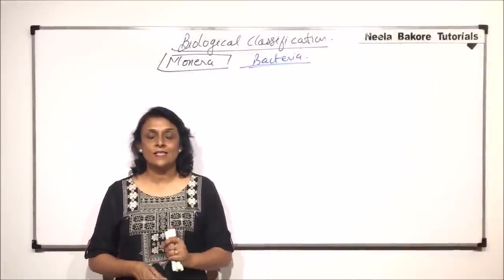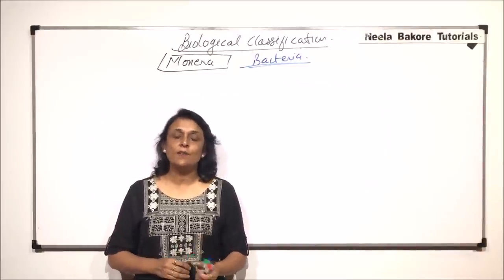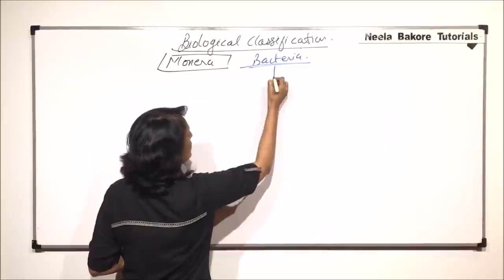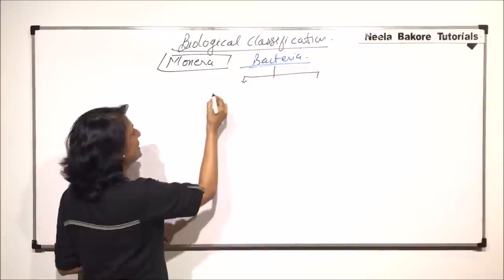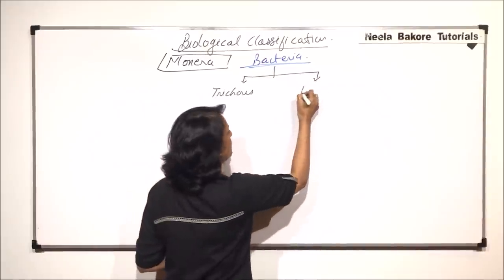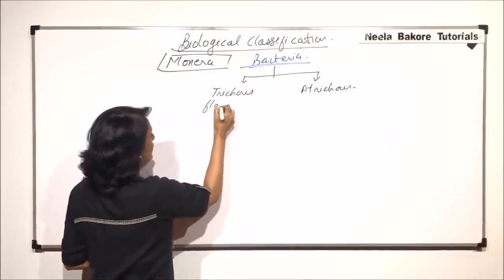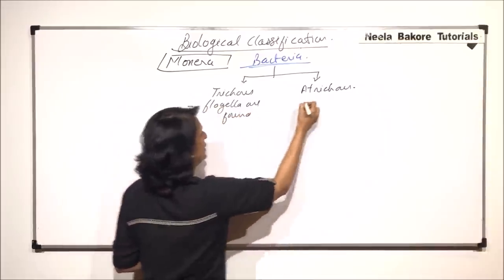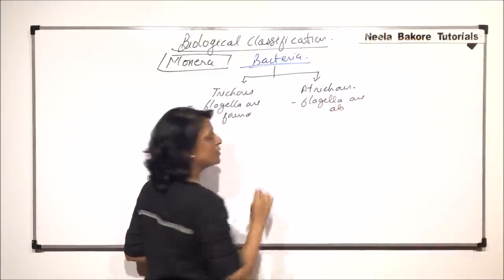In this part, we will try to classify bacteria on the basis of the arrangement of flagella and we will also see the structure of a flagella. If flagella are present, then they are called tricus. And if flagella are absent, then those bacteria would be called atricus. So here flagella are present and here flagella are absent.